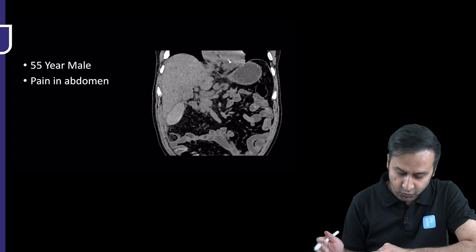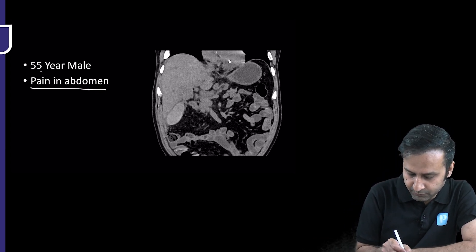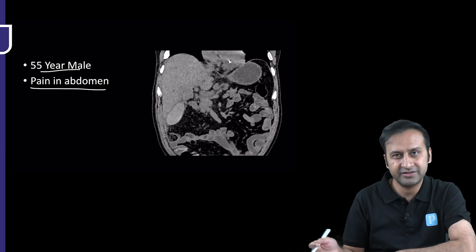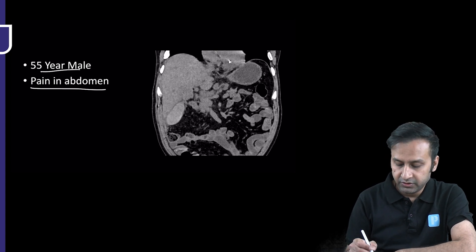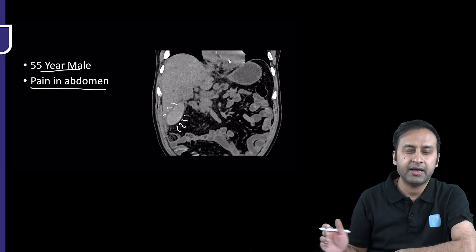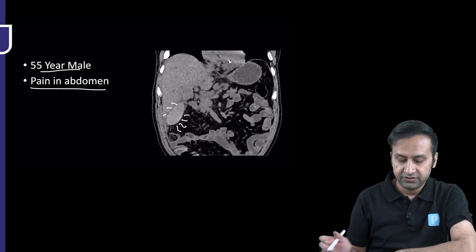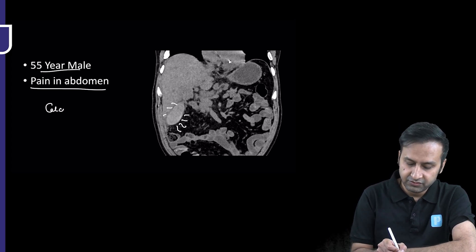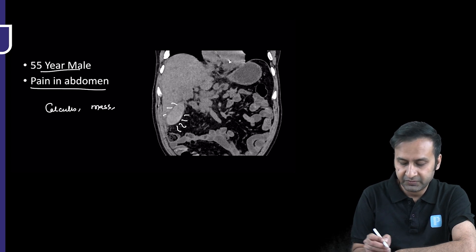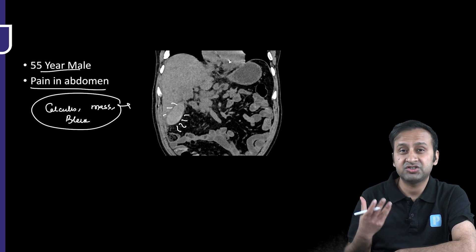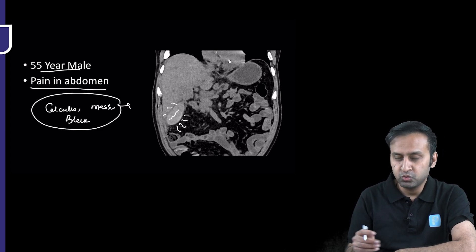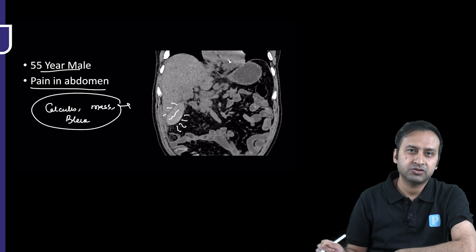This is a 55-year-old man who came with pain in the abdomen. The patient was sent directly for a CT, not for ultrasound. What do you see? The gallbladder is filled with something appearing hyperdense. What do you think it is — a calculus, a mass, or some form of bleed? These are the three things that come to mind when we see a gallbladder that is turgid, tense, and showing smooth hyperdensity.